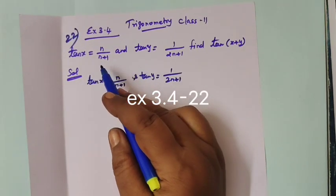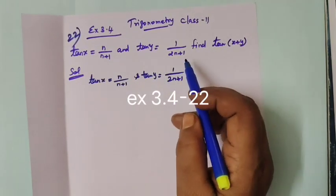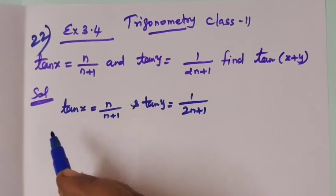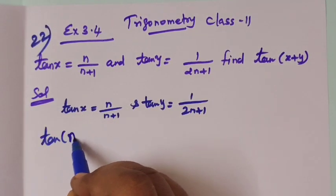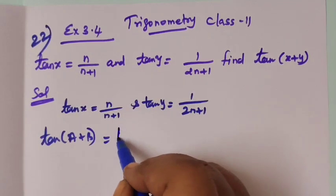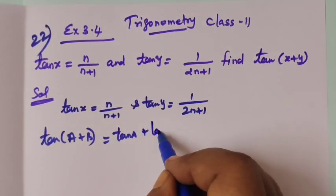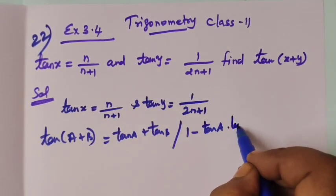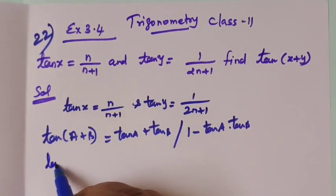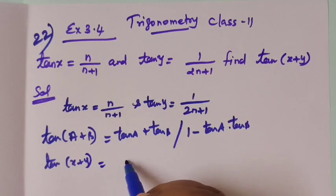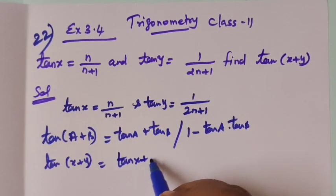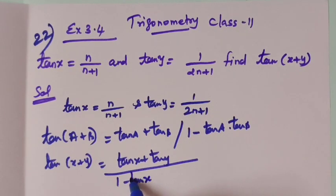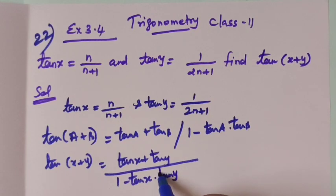Now exercise 3.4, problem 22. Tan x has a value, tan y has a value given. Find tan of x plus y. For this we use the formula: tan of a plus b equals tan a plus tan b by 1 minus tan a tan b. So tan of x plus y equals tan x plus tan y by 1 minus tan x tan y.